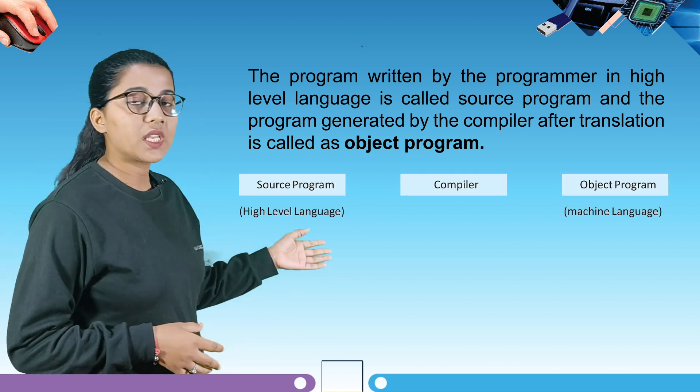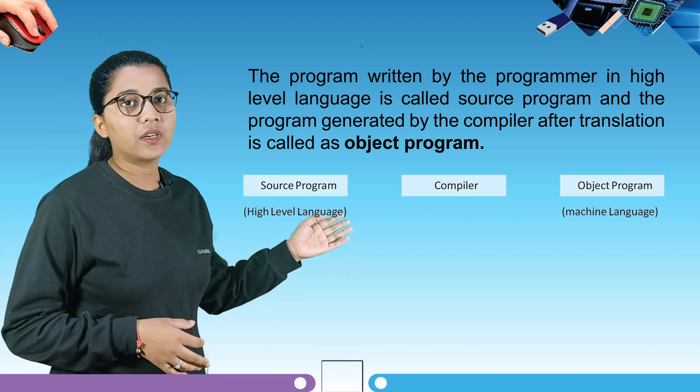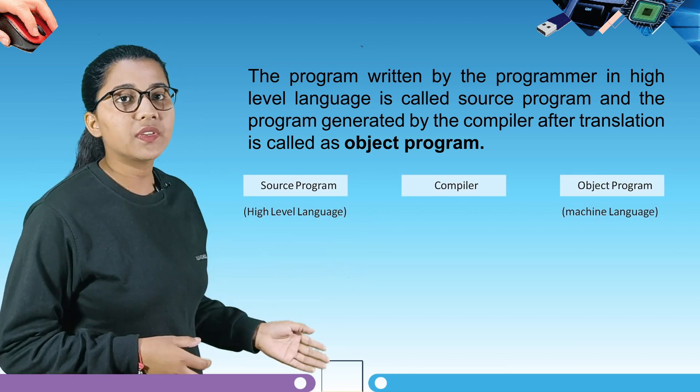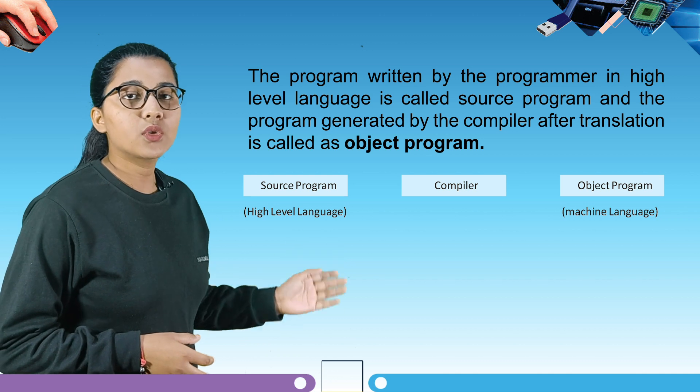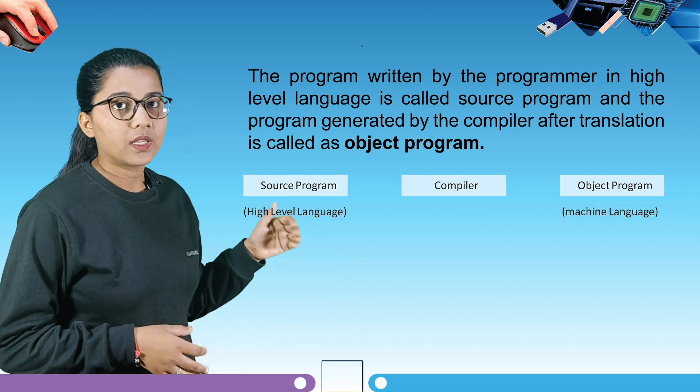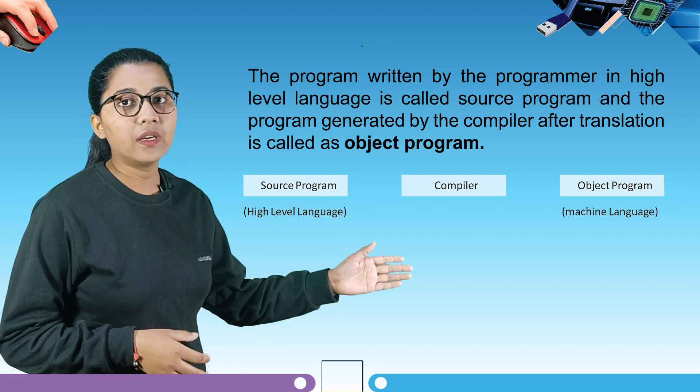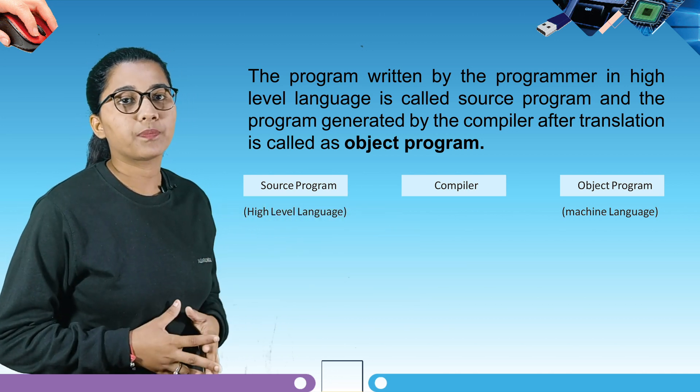Here you can see the process of the compiler: first we have the source program, then the compiler, then the object program.